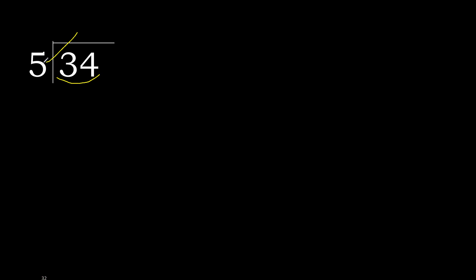5 multiplied by 7 is 35 — it's greater. Multiply by 6: 30 is not greater. 34 minus 30 is 4.